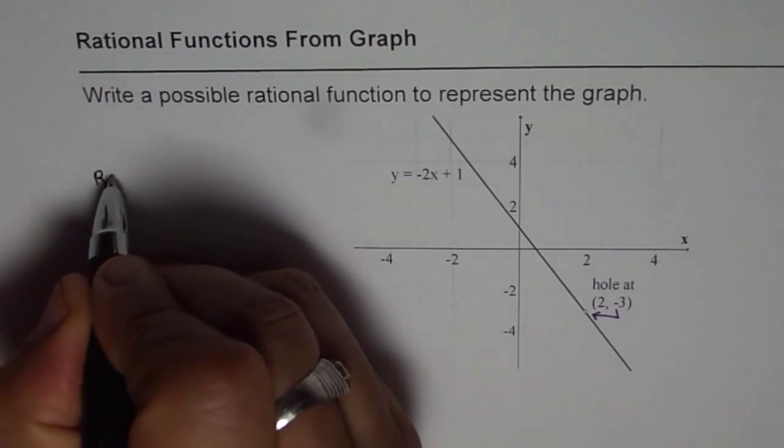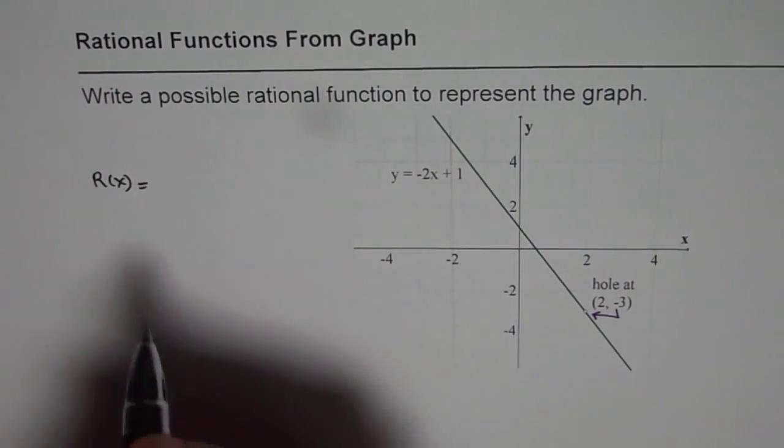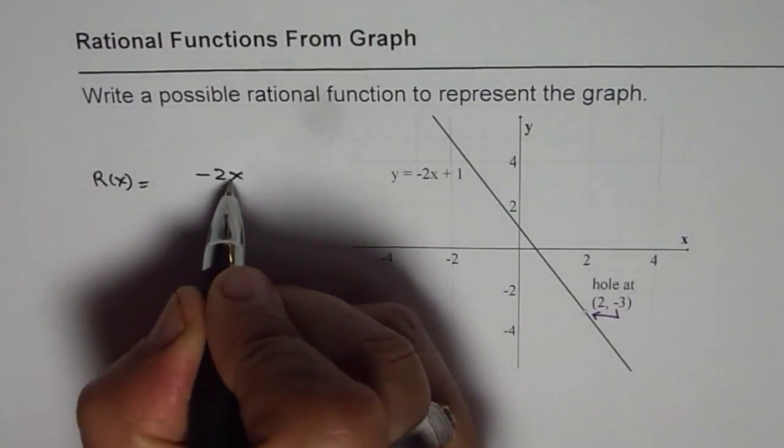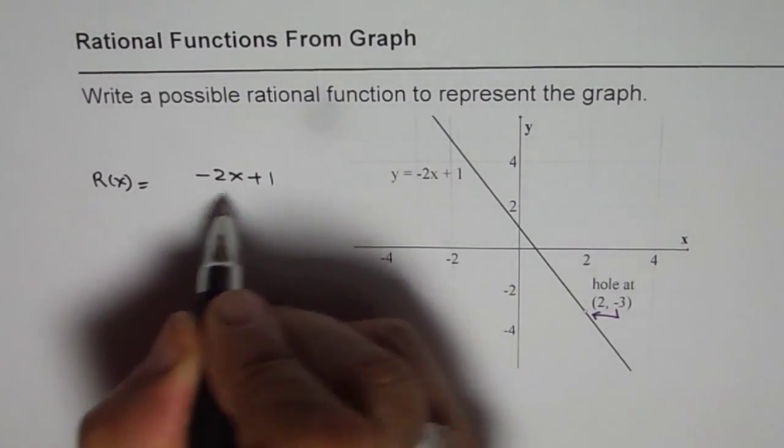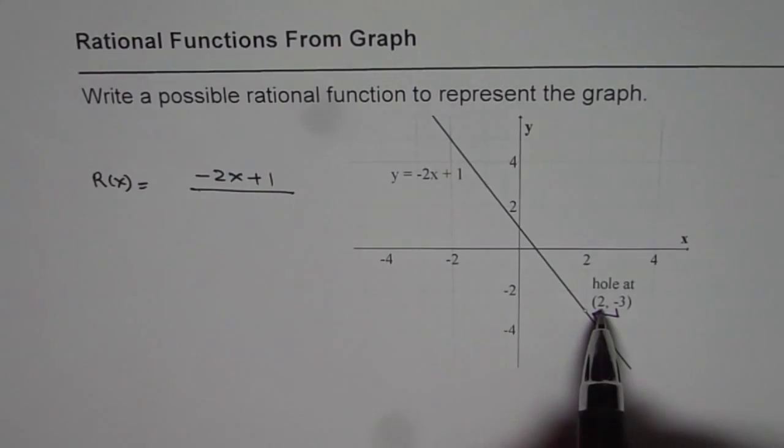The rational function will be, it boils down to a straight line which is minus 2x plus 1 with a hole. And the hole is at x value of 2. So the hole is at x value of 2.